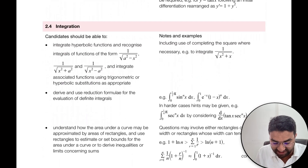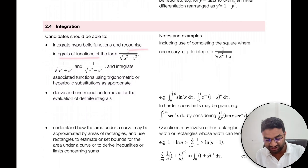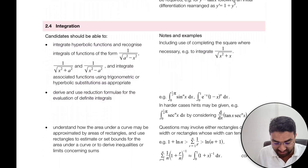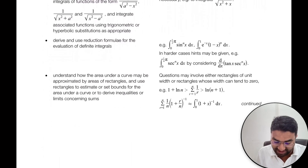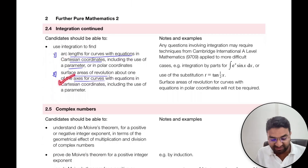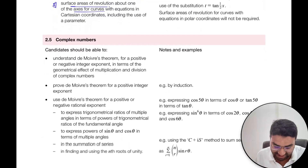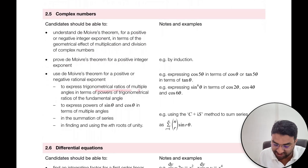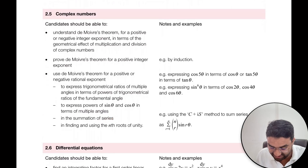Then integration: integrate hyperbolic functions, recognize integrals of functions of the form 1 over √(a²−x²) and 1 over √(x²+a²). We also need to understand integrals associated with functions using trigonometric and hyperbolic substitution, the area under the curve, arc length, and surface area of revolution. The fifth part is complex numbers — De Moivre's theorem for positive, negative, and rational components, trigonometric ratios of multiple angles, expressing powers of sin θ and cos θ, finding summations, and finding and using the nth roots of unity.